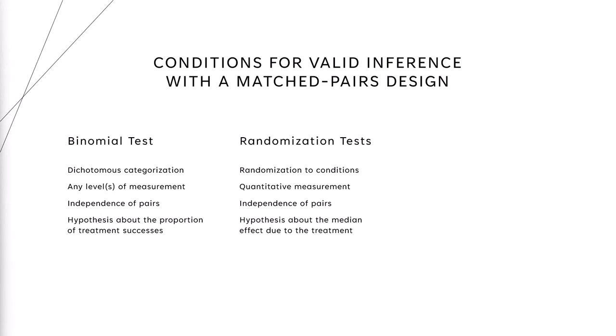That is, if we have met all the conditions for the randomization test, we could choose to do the binomial test, because meeting all of the conditions for the randomization test is meeting even more than the conditions we need for the binomial test — so we have a choice about which hypothesis to use.